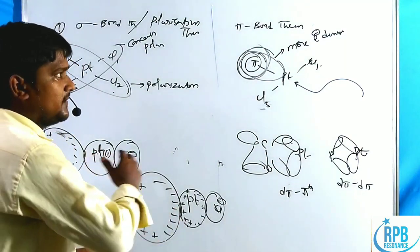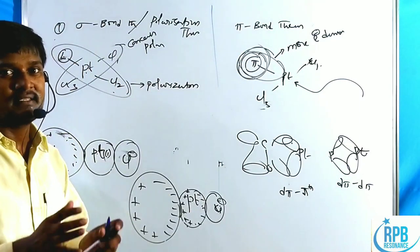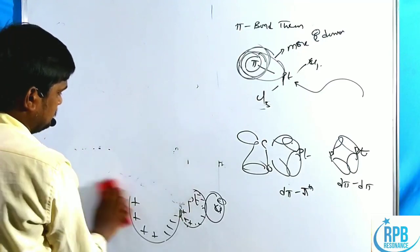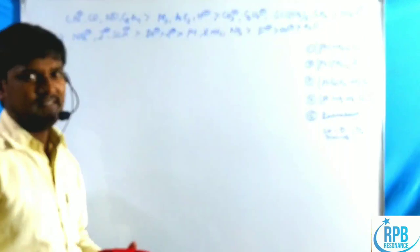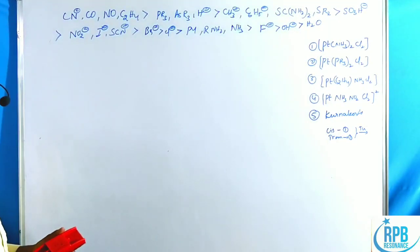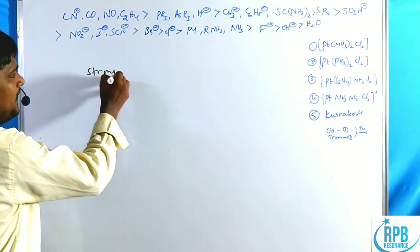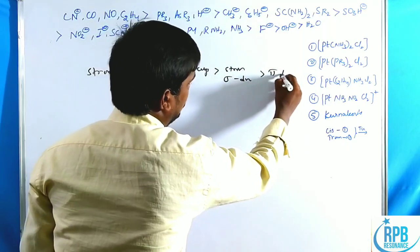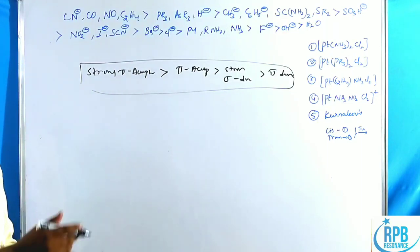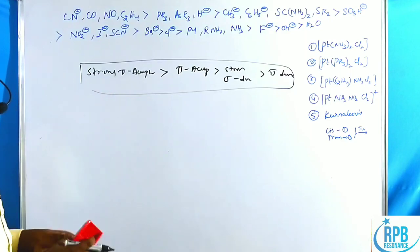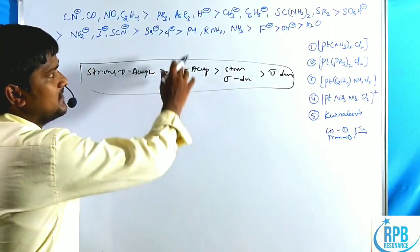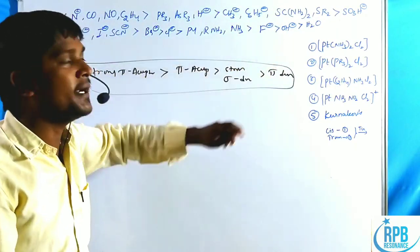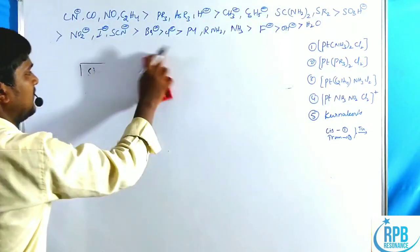Based on various experiments, scientists arranged the trans-directing group series. The highest trans-directing groups are strong pi acceptors — CN^-, CO, NO, C2H4. Then come pi acceptors, followed by strong sigma donors, and finally pi and sigma donor ligands such as F^-, OH^-, Br^-, Cl^-, NH3. This is the general trans-directing group order.